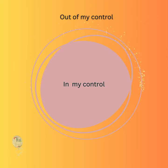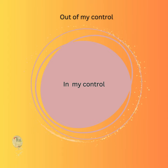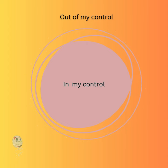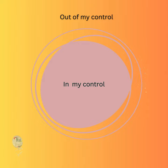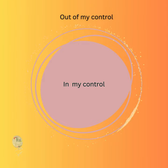4. Strategy Evaluation and Control: When monitoring and evaluating your progress, you assess how well you've controlled the internal factors and how effectively you've adapted to external influences. Therefore, understanding 'in my control' and 'out of control' items is not limited to a specific area but acts as a guiding framework for the entire strategic management process.